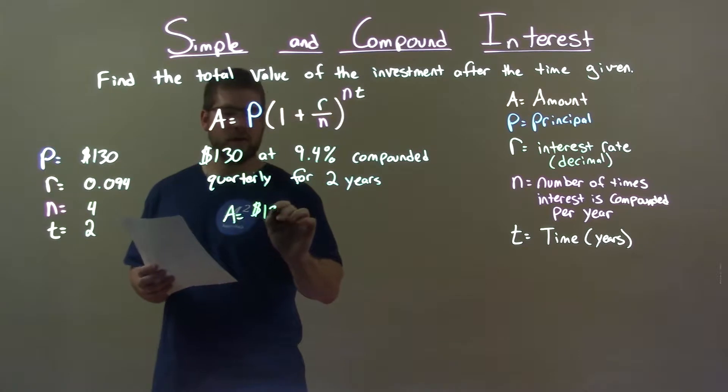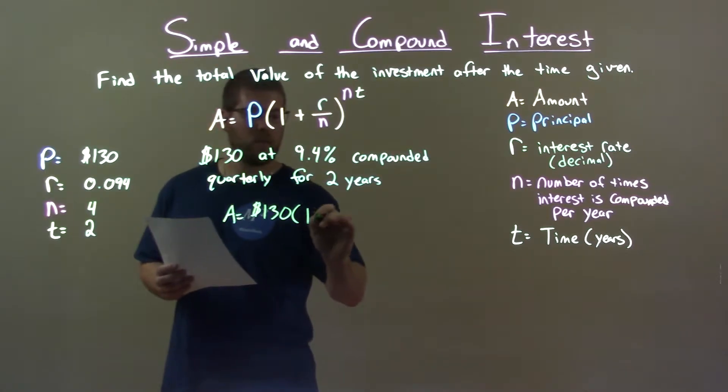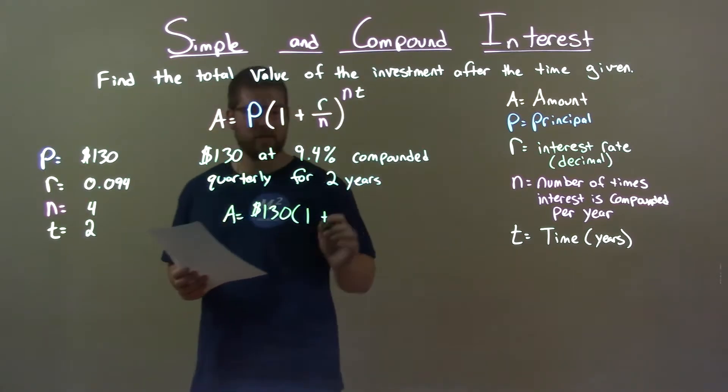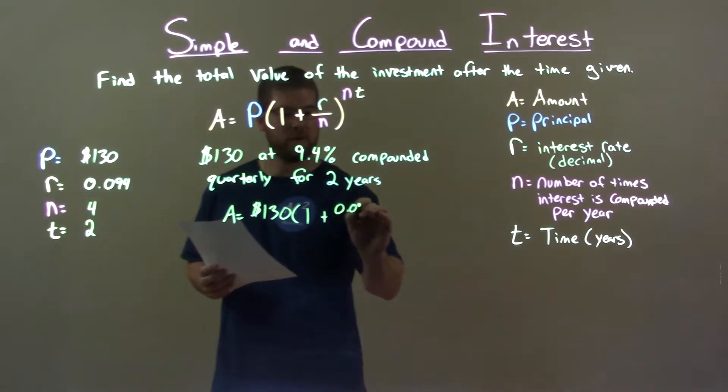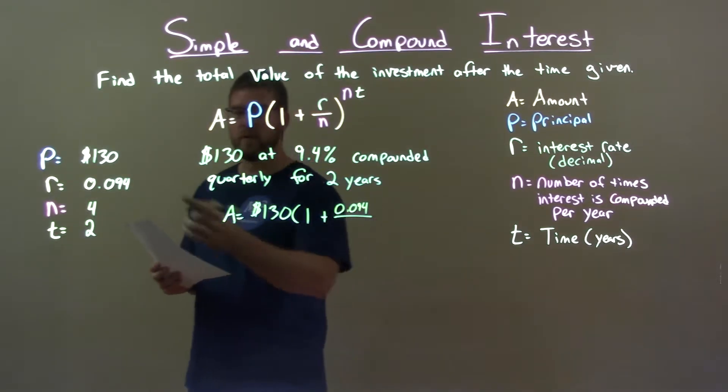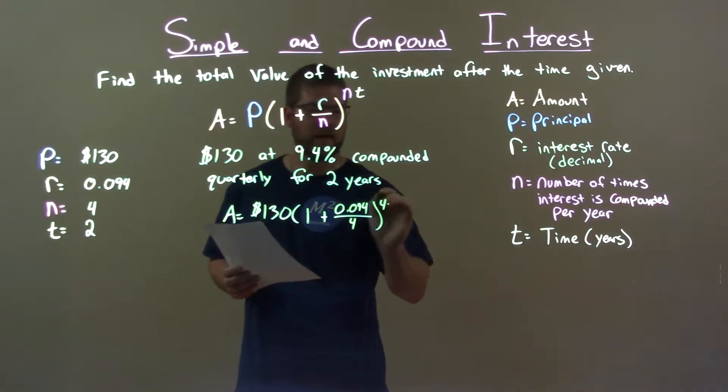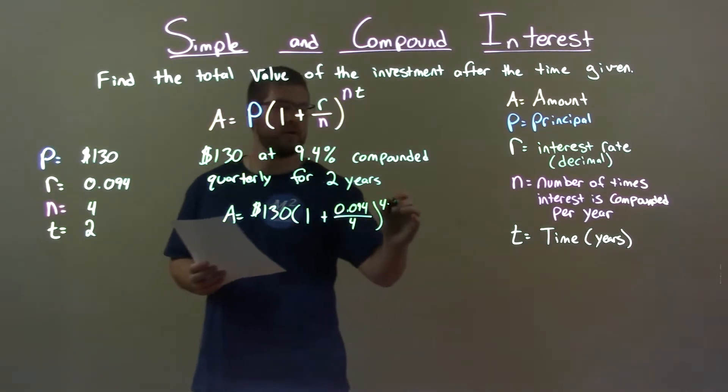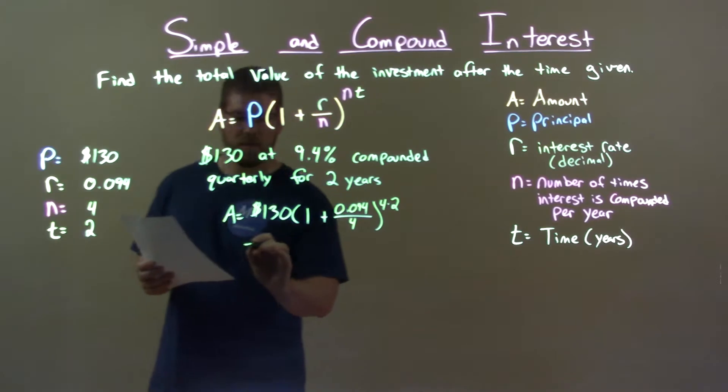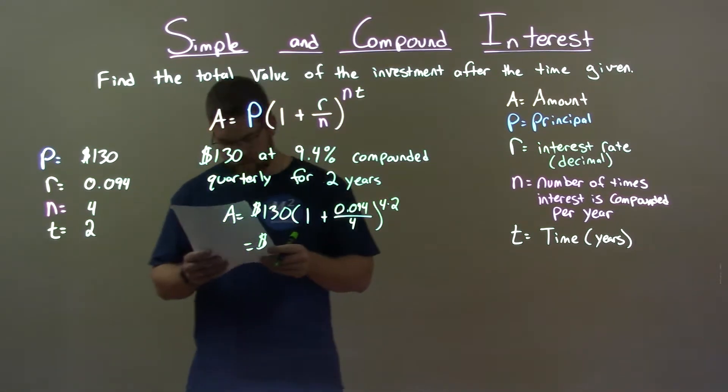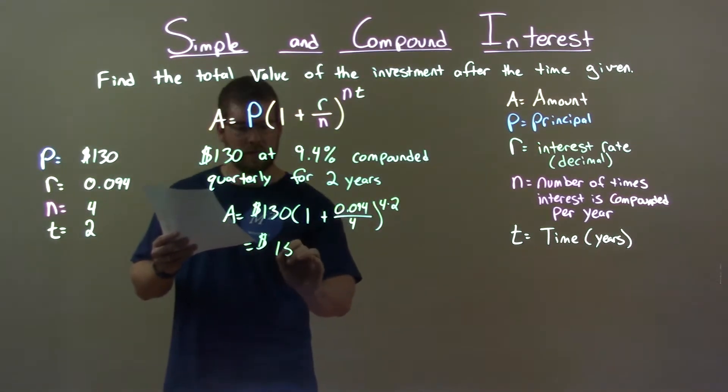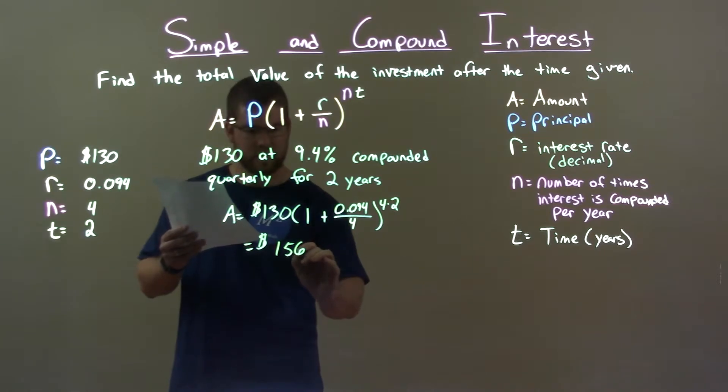Principal, $130. Multiply that by 1 plus interest rate as a decimal, 0.094, over the number of times we compound in a year, which is 4, quarterly. To that same power, 4 times the number of years, which is 2. This gives us a final investment value of $156.55.